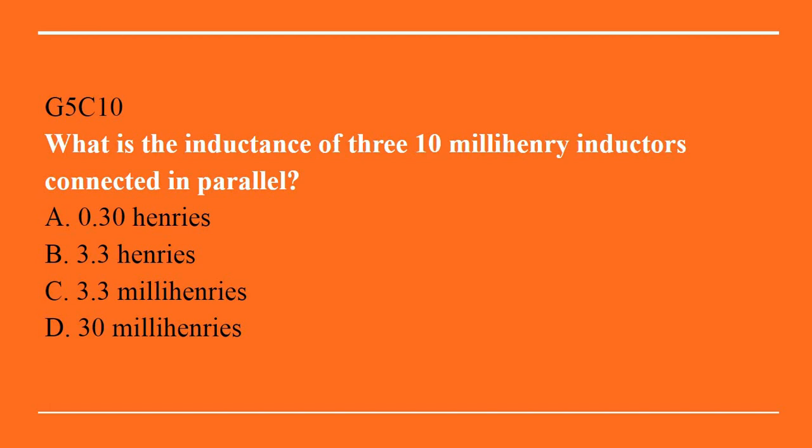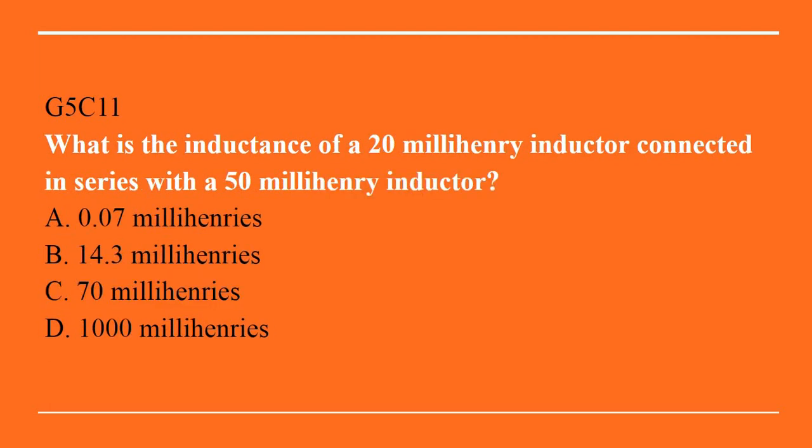G5C10: what is the inductance of three 10 millihenry inductors connected in parallel? The answer is C: 3.3 millihenries. G5C11: what is the inductance of a 20 millihenry inductor connected in series with a 50 millihenry inductor? A. 0.07 millihenries. B. 14.3 millihenries. C. 70 millihenries. Or D. 1,000 millihenries. Correct answer is C: 70 millihenries.